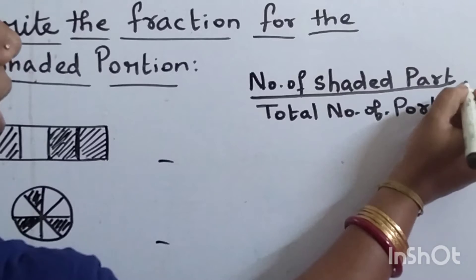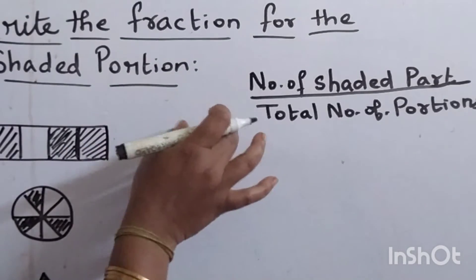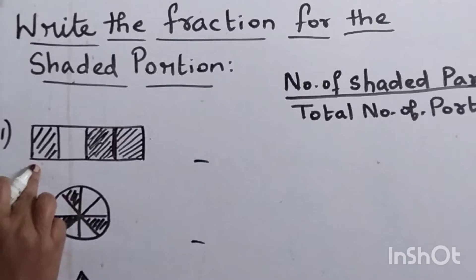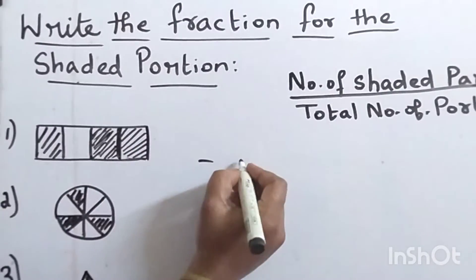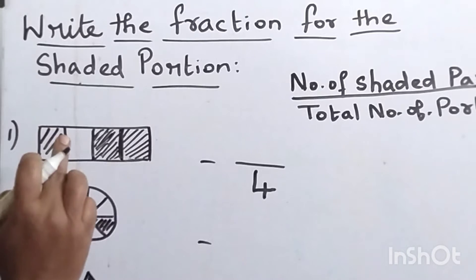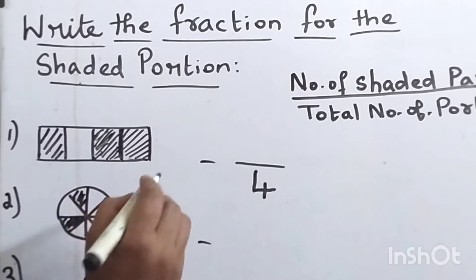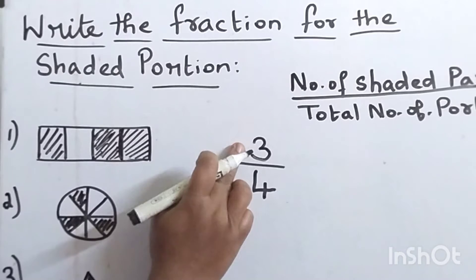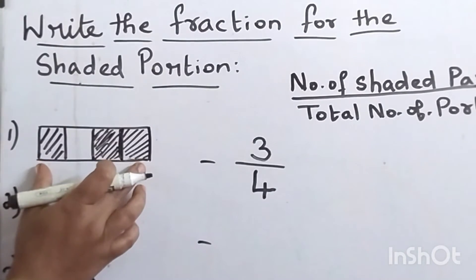Denominator equals the total number of portions. How many parts are there totally? Four parts — one, two, three, four. So I'm writing the total number of parts at the bottom, that is the denominator. Now counting the shaded parts: one, two, three. Three parts are shaded out of four. So I'm writing three at the top. The fraction is three by four for this figure.